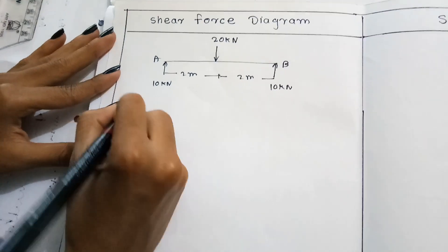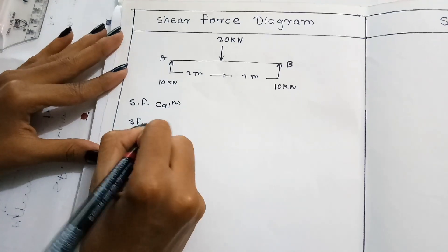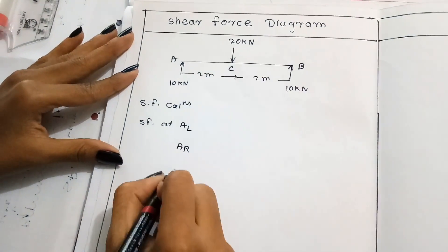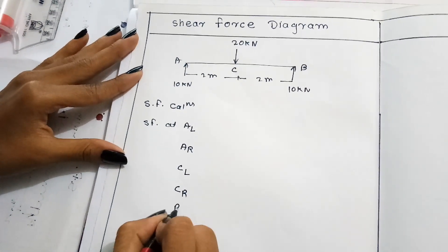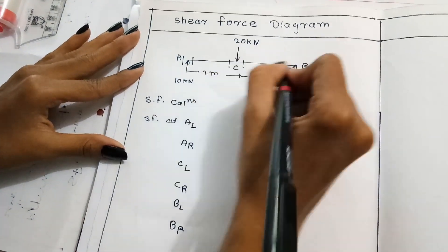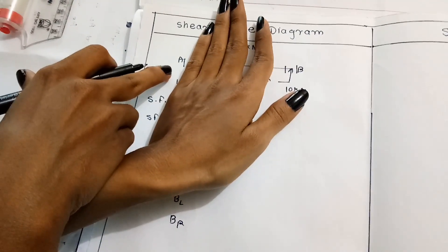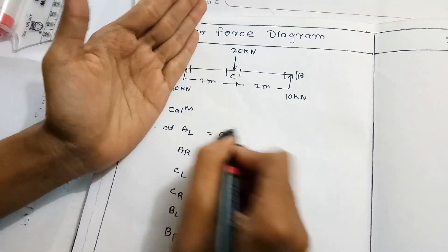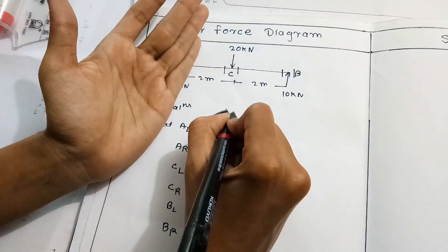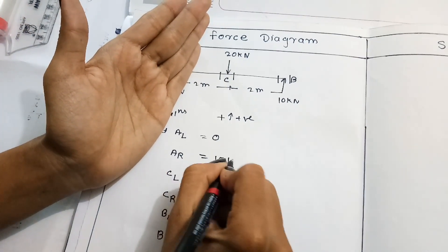Shear force calculations: we calculate SF at A-left, A-right, C-left, C-right, B-left, and B-right. On the A-left side there is no force, therefore A-left equals 0. On the A-right side there is one force going upward; considering upward force as positive, that is 10 kN upward, therefore A-right equals 10 kN.